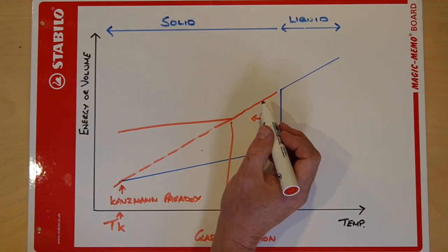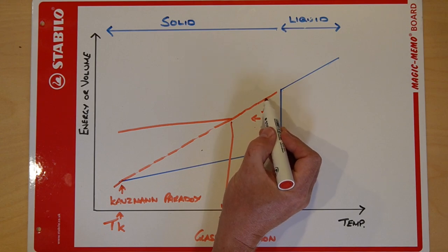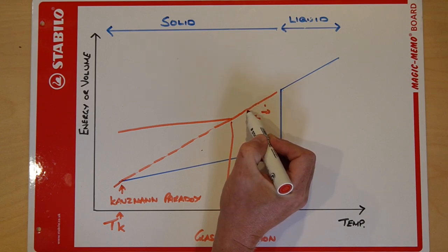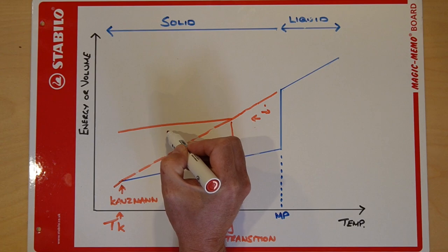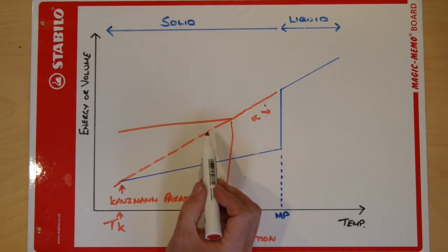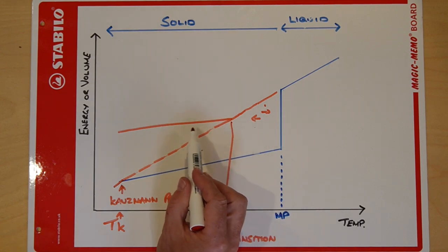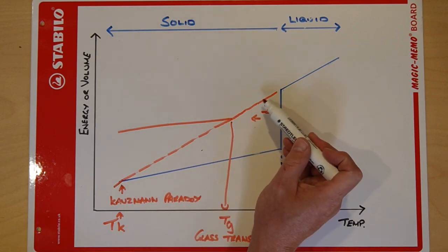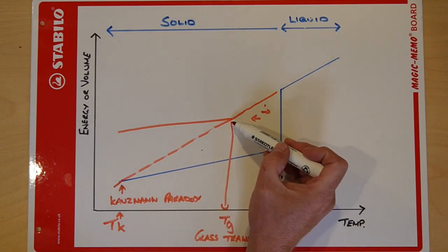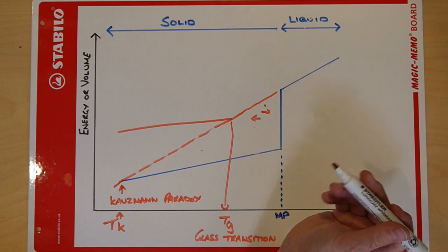At this point, the material is said to be out of structural equilibrium. So my view of moving along this line with temperature is that the material is always a liquid, but its viscosity is always changing. Below the glass transition temperature, the viscosity is so high the material appears solid. And above the glass transition temperature, the viscosity is lower, so the molecules can move about.